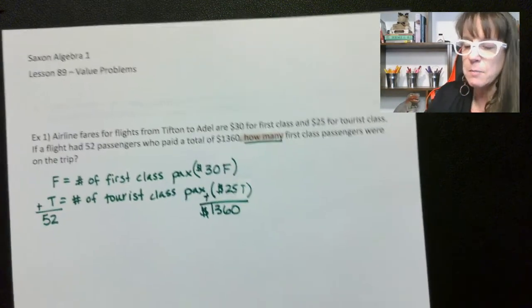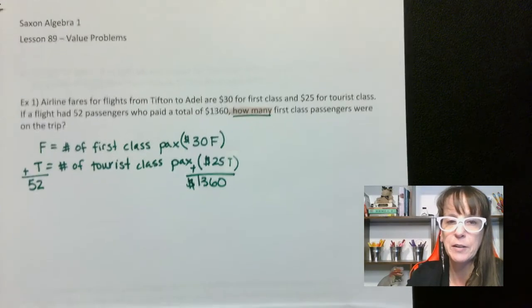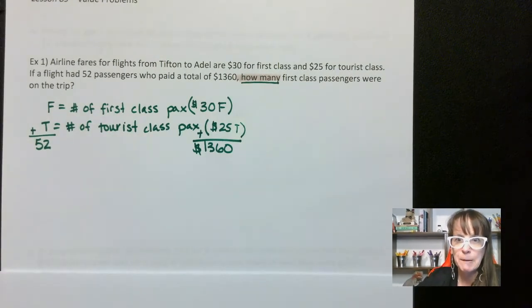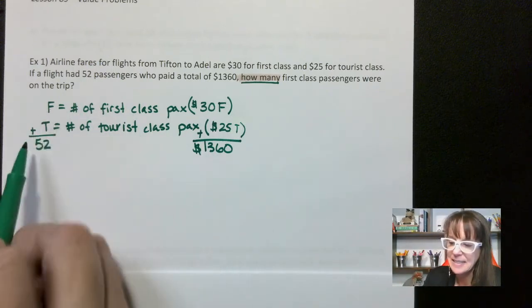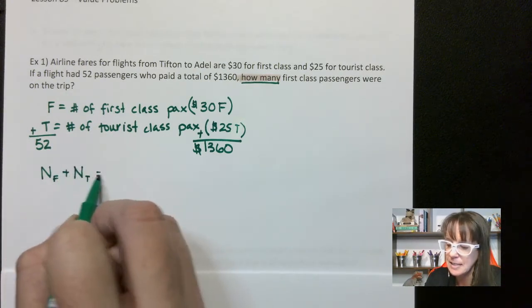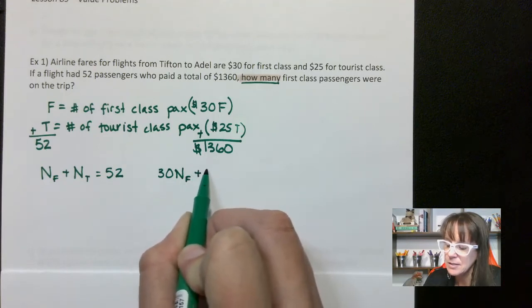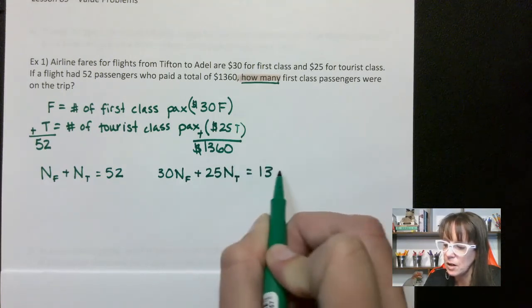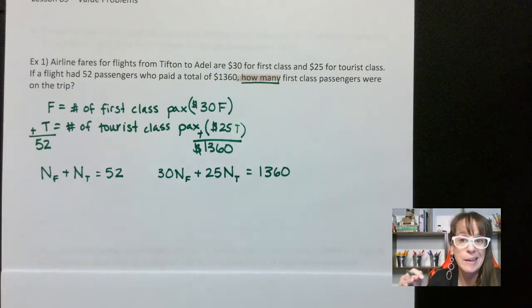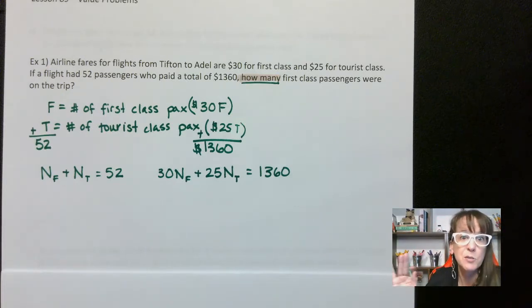Subscripted variables — Saxon does it. You don't have to, but it is really helpful for figuring out what you're looking for. Since we're looking for the number of passengers, instead of F plus T equals 52, I'm going to say N sub F — the number of first class — plus N sub T — the number of tourist class — equals 52. And 30 times N sub F plus 25 times N sub T equals 1,360. We could have just done F and T, but going through Saxon all the way through advanced mathematics, they use a ton of subscripted variables. So this is really good practice.